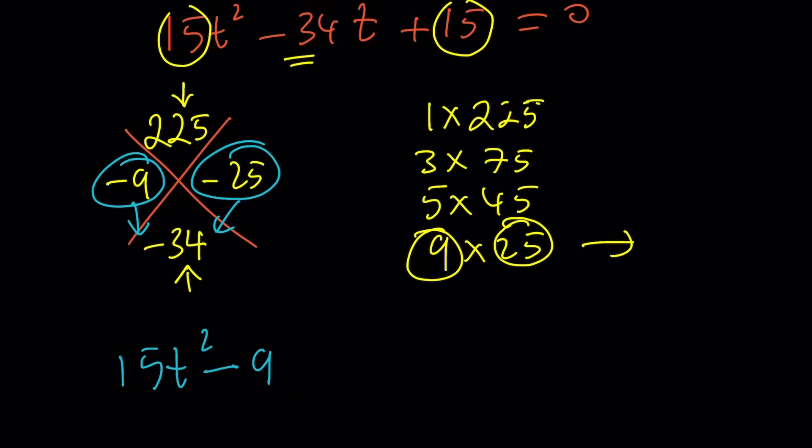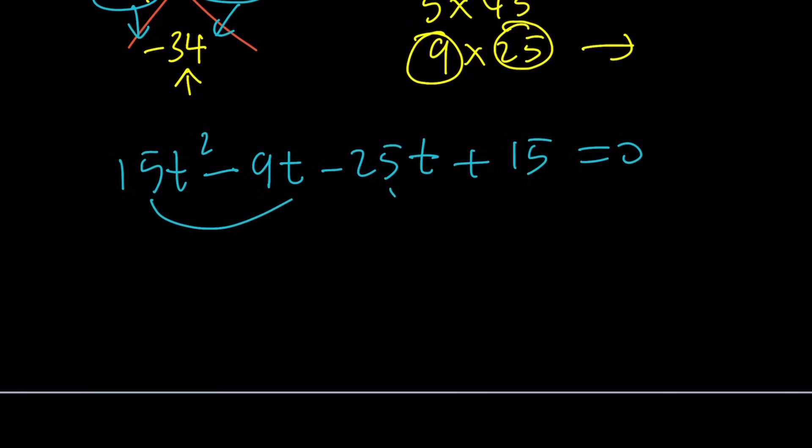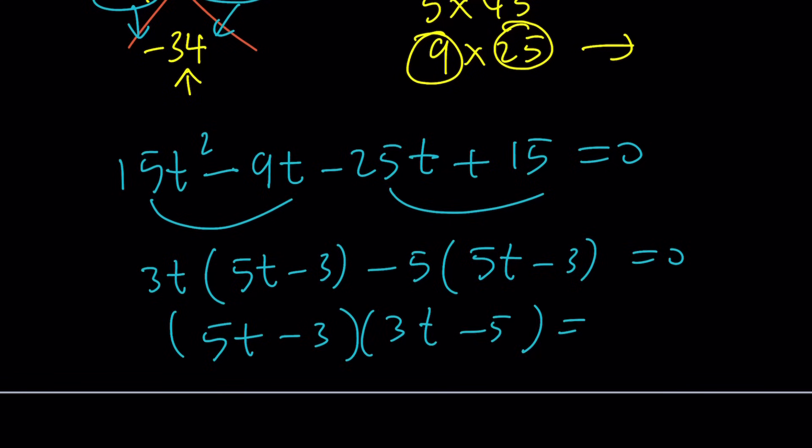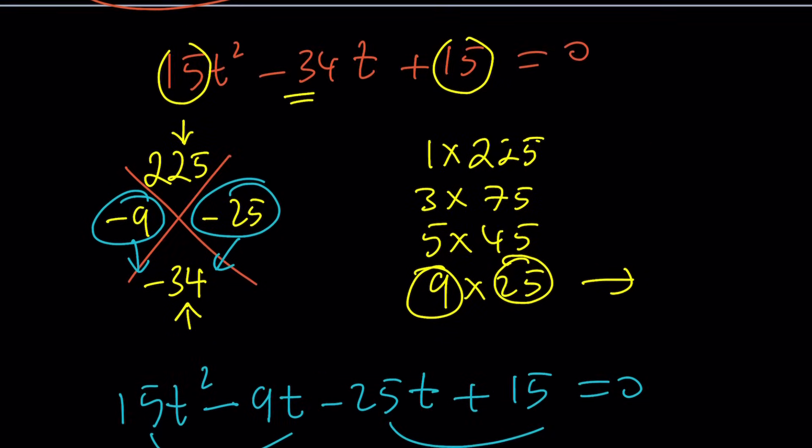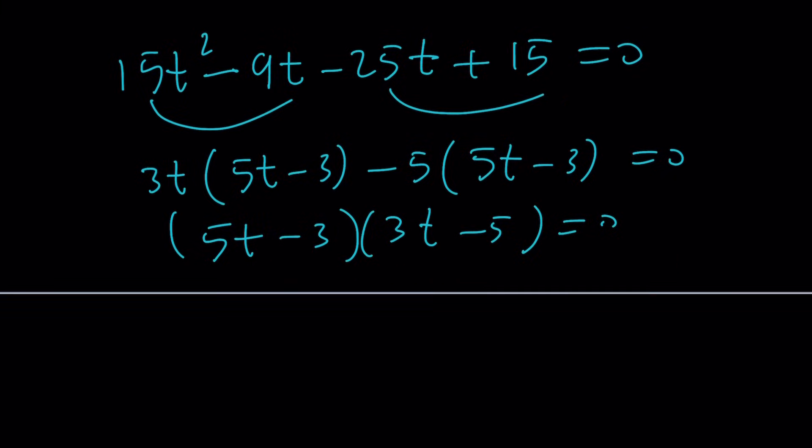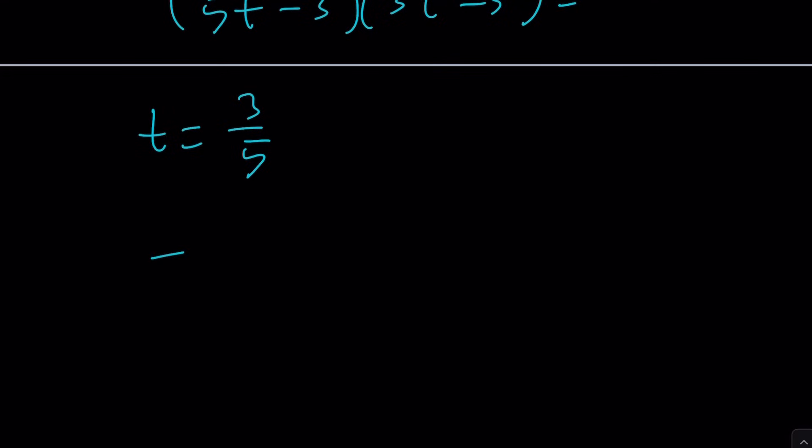Now, these two numbers basically give us a way to break down the negative 34. We can write it as minus 9t minus 25t plus 15. And then this becomes factorable by grouping. For example, here we can take out a 3t. 5t minus 3, minus 5, 5t minus 3. And common factor 5t minus 3 and 3t minus 5. Or you could do trial and error and factor it. So these are the factors. We get t equals 3 over 5 or t equals 5 over 3.